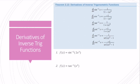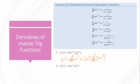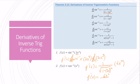Let's work through an example. For sine inverse of 2x cubed, we need to use the chain rule. The derivative is 1 over the square root of 1 minus (2x cubed) squared, times the derivative of 2x cubed, which is 6x squared. So the derivative is 6x squared over the square root of 1 minus 4x to the sixth.